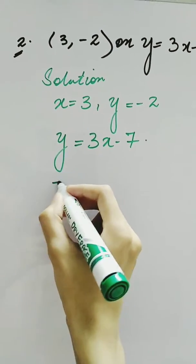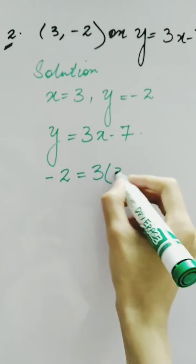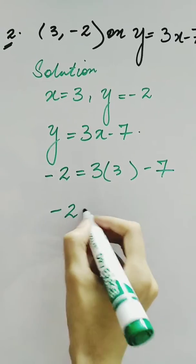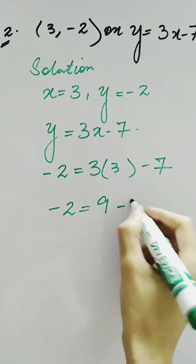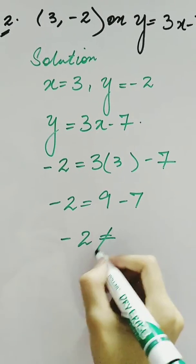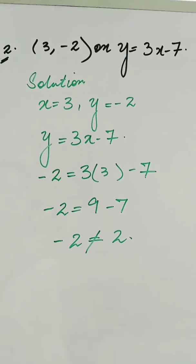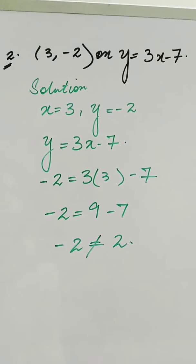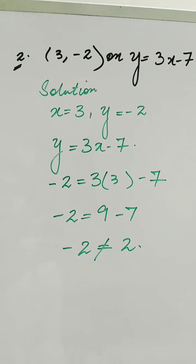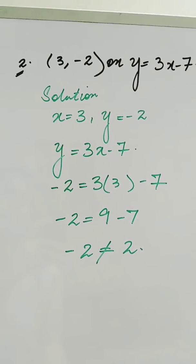We put the values: y = -2, and 3(3) - 7 gives 9 - 7 = 2. Here, -2 is not equal to 2. So we know that these points are not satisfying this equation — these points don't land on the given line.